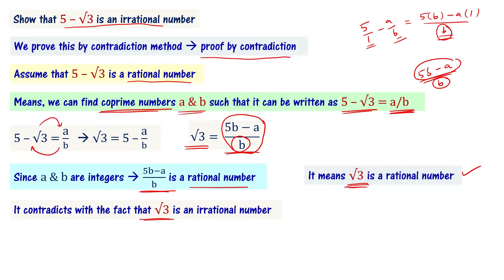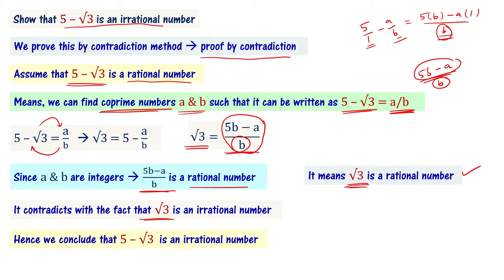Whatever we obtained contradicts the fact that root 3 is an irrational number. This contradiction arose because we assumed wrongly that 5 minus root 3 is a rational number. Therefore, our initial assumption was wrong, and we can conclude that 5 minus root 3 is an irrational number. This is how we prove it using the proof by contradiction method.